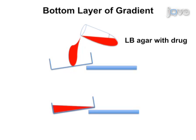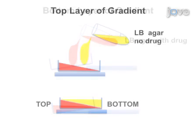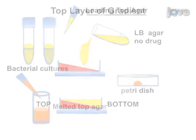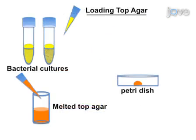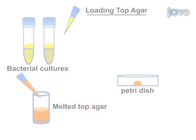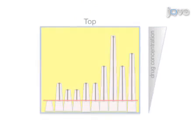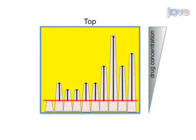In the second portion of the protocol, a gradient growth plate is constructed and bacterial cultures of the readout strain are loaded into a separate petri dish containing soft agar. The final step of the procedure is to stamp transfer these bacterial cultures to the gradient. Ultimately, results can be obtained that show changes in the phenotype profile of a given target sequence through differences in growth on a drug gradient.